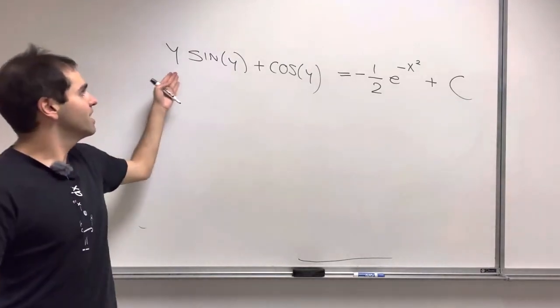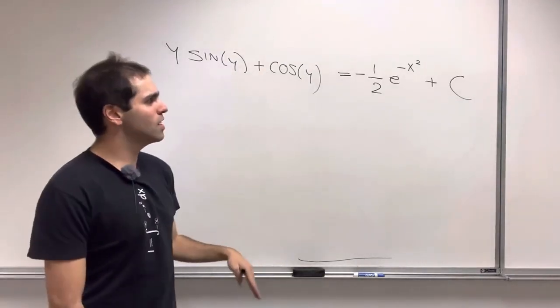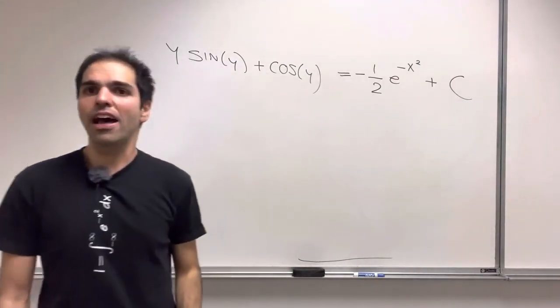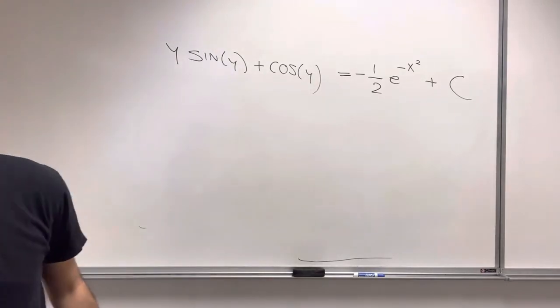So then what we get, again, y sine of y plus cosine of y equals minus 1 half e to the minus x squared plus a constant.